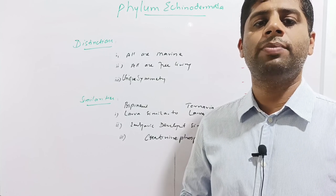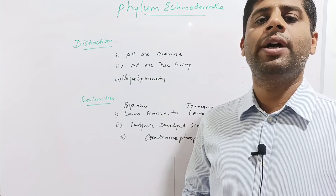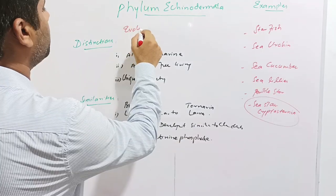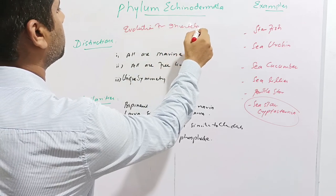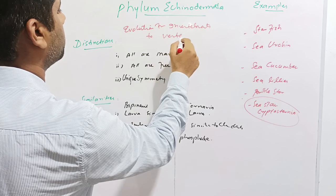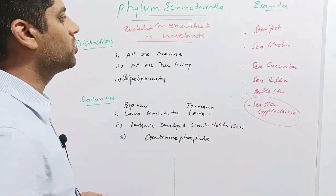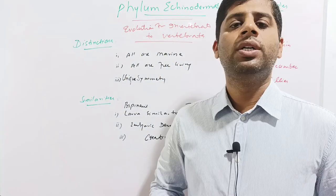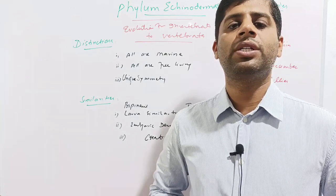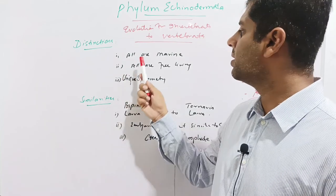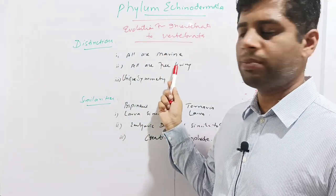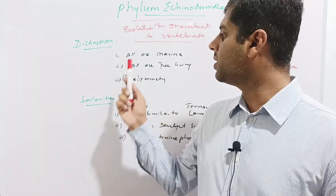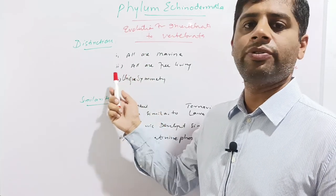The Phylum Echinodermata is distinct from the rest of the invertebrate phyla in three ways: they are all marine, they are all free-living with no parasitic members, and they show a unique symmetry in which the larva is bilaterally symmetrical and the adult is radially symmetrical. These distinctions provide the basis of evolution from invertebrates to vertebrates.